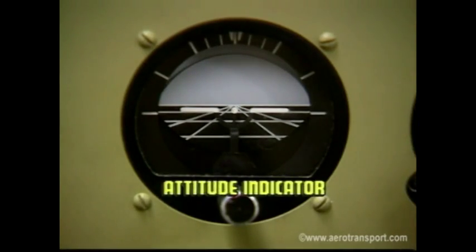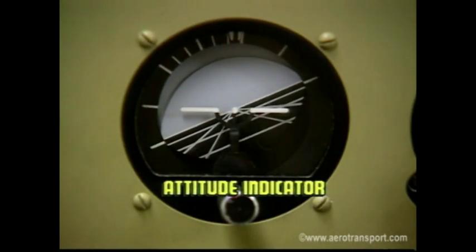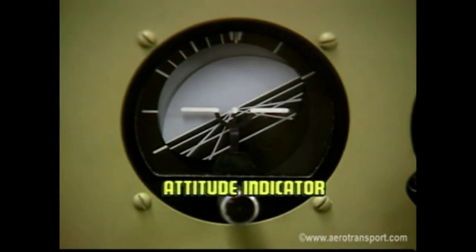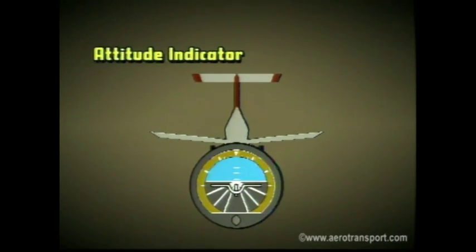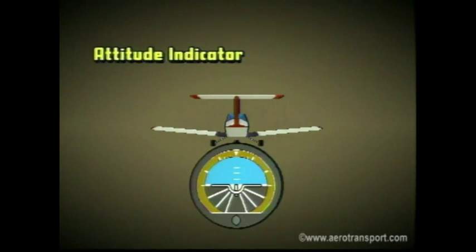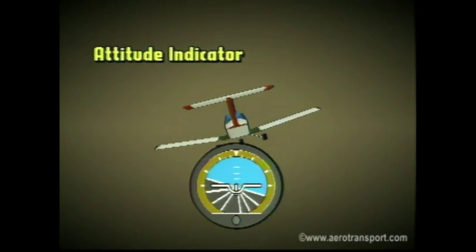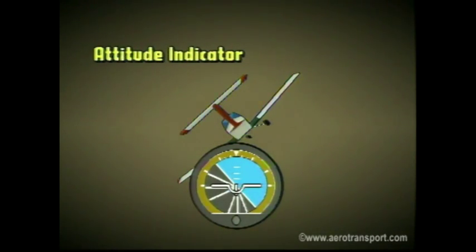The next instrument is the attitude indicator, also known as the artificial horizon. This instrument gives the pilot a horizon of reference when the natural horizon is not visible, showing the relationship of the nose and wings to the Earth. The face of the instrument has a horizon bar and a split bar, or a miniature aircraft, to represent the attitude. The degree of bank is indicated by a scale at the top. When a plane is in a nose-down attitude, the miniature plane drops below the horizon bar; in a nose-up attitude, it rises above the artificial horizon. In level flight, it is lined up with the horizon. When you bank the aircraft, the miniature plane on the instrument banks, and the pointer indicates the degree of bank on the index scale.